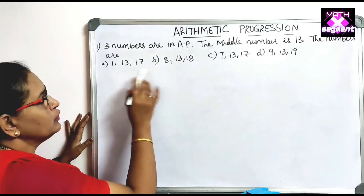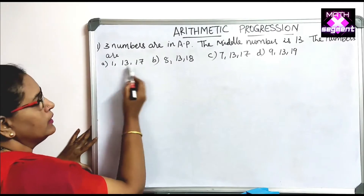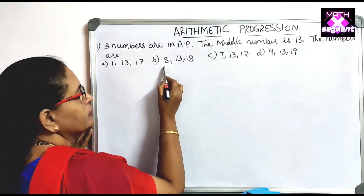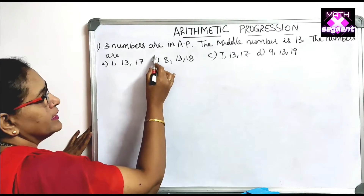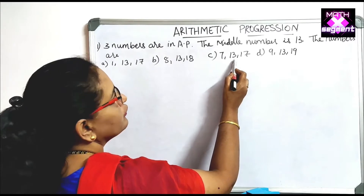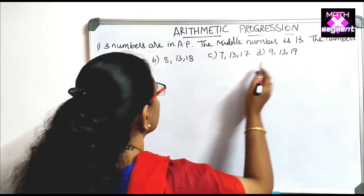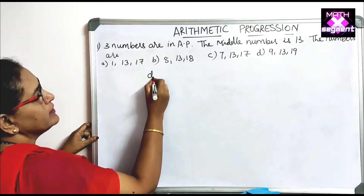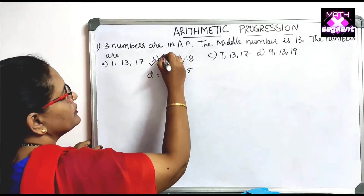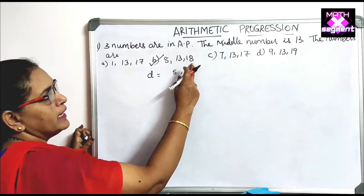We need to find which option has the same difference. 13 minus 1 is 12, 17 minus 13 is 4 — not equal, so not that option. 13 minus 8 is 5, 18 minus 13 is 5 — same difference, so this is the right answer. Checking others: differences are 6 and 4, or 4 and 6 — not equal. So option B, the three numbers 8, 13, and 18, is correct.